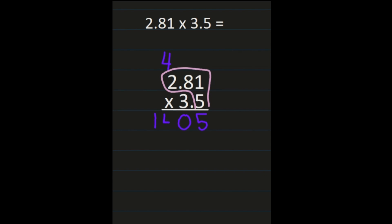Notice I've not done anything with the decimals yet — I'm going to multiply as if the decimals aren't even in my problem. I've used the 4 and the 5, so I'm going to cross those out and drop my 0 before starting to multiply everything by the 3. So 3 times 1 is 3, then 3 times 8 is 24 — I'll place the 4 and carry the 2. Then 3 times 2 is 6, plus 2 more is 8.